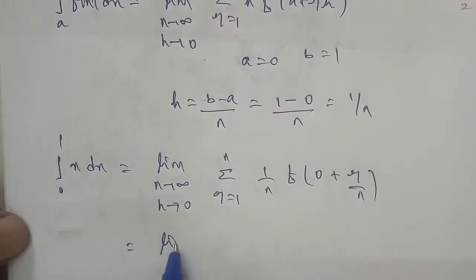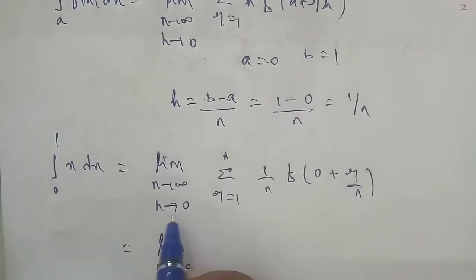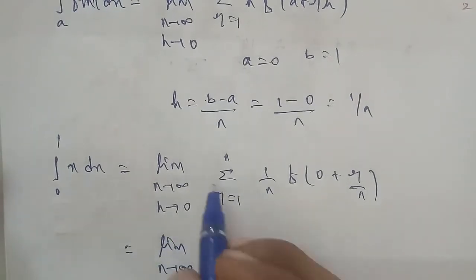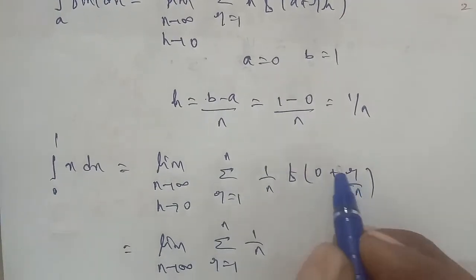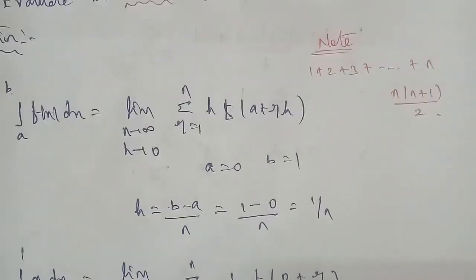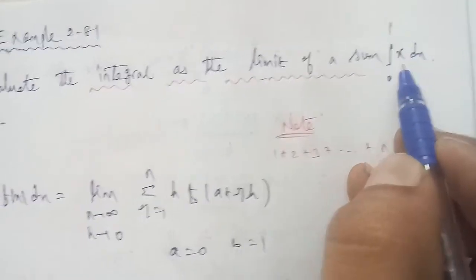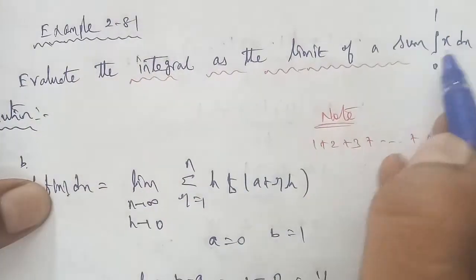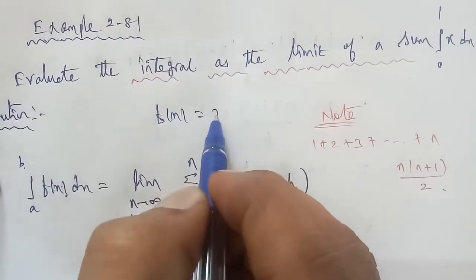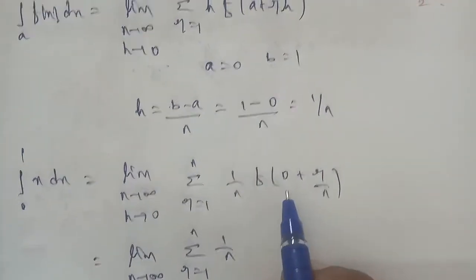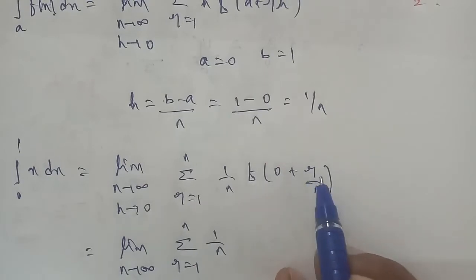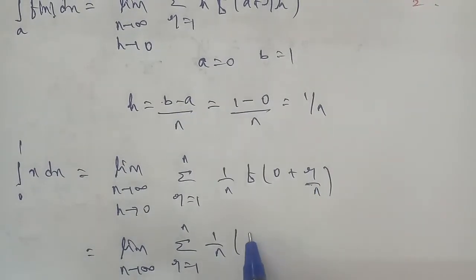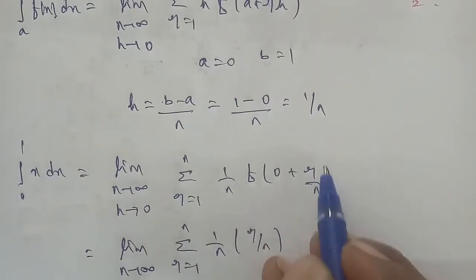Next, limit n to infinity. The h term is removed. Remaining is sigma r equal to 1 to n, 1 by n. Here f of x is equal to x, so f of r by n is r by n.